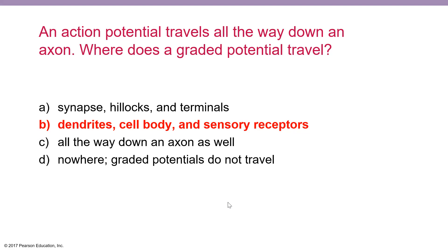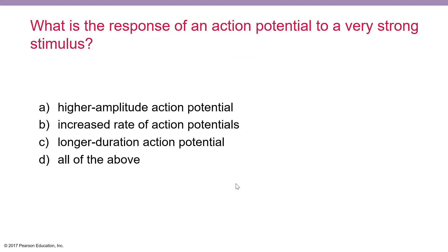Just to point out here, C would have been the option if we were speaking about an action potential — it goes all the way down the axon. Let's look at another question.